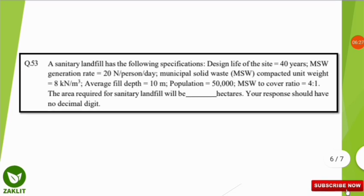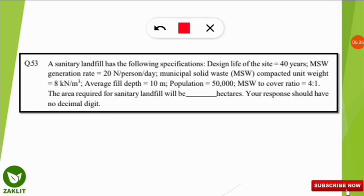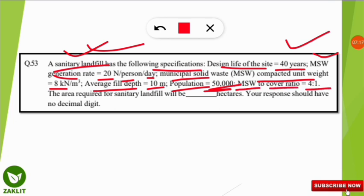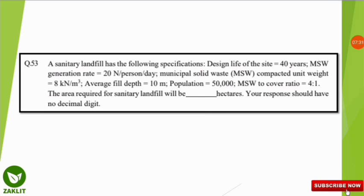The next question is a numerical on sanitary landfill. The specifications are: design life = 40 years, MSW generation rate = 20 N per person per day, compacted unit weight = 8 kN/m³, average field depth = 10 m, population = 50,000, and MSW to cover ratio = 4:1. We need to find the area required for the sanitary landfill in hectares.